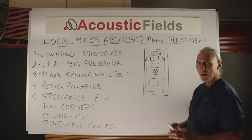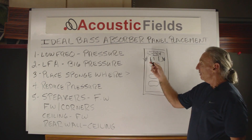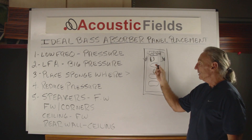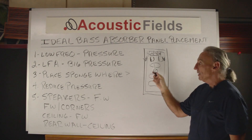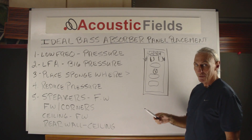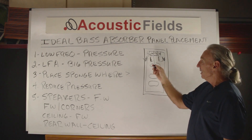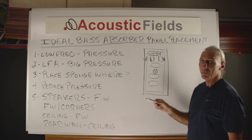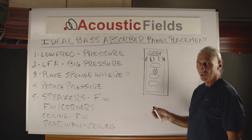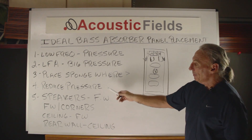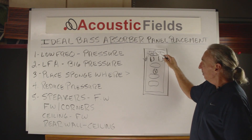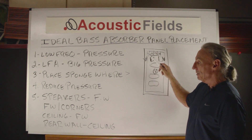When people buy our BDA products — our low frequency absorption products — and build them themselves, I always tell them this is your start point for positioning, because this is the highest pressure area in your room and this is where you get the most acoustic benefit. One unit minimum behind each speaker will make a huge difference. Two units in most rooms is usually ideal. We're all about reducing the pressure, and it's the front wall to speakers that has the highest pressure.